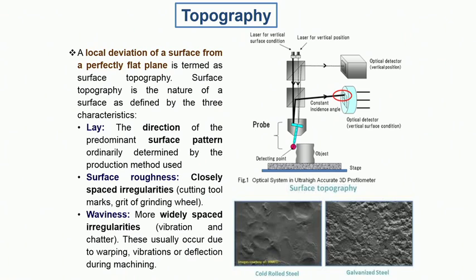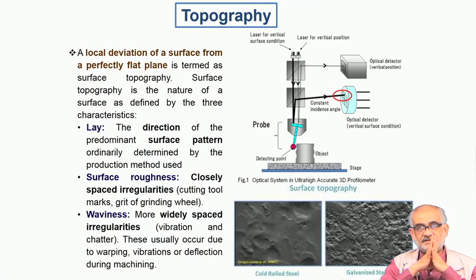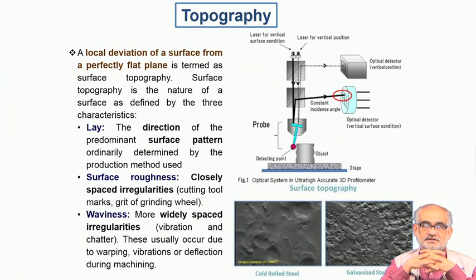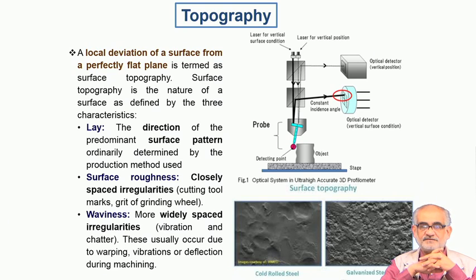I probably did mention in the last lecture that no matter how careful you are when you synthesize any solid by either a solid state or a liquid to solid or vapor to solid kind of transformation, the surface will definitely have a certain degree of asperities.